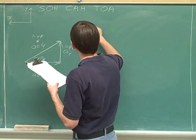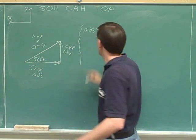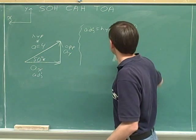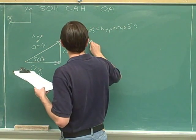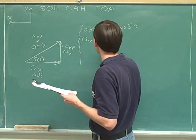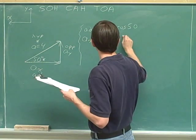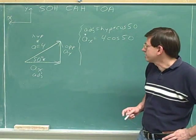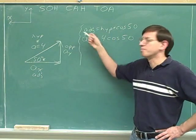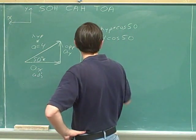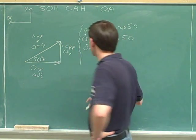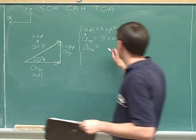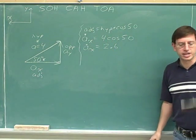We'd like to find the length of the adjacent side using the hypotenuse. The cosine tells us about the adjacent side. Here, the cosine of 50 — our adjacent side is a sub x, and our hypotenuse is 4. Now, we don't want to write just a sub x; we want to write a sub x with a dot, because trig functions refer to magnitudes, not signed quantities. We continue with the magnitude: 4 times cosine of 50 equals 2.6. That's a magnitude, so there's no need to indicate its sign.